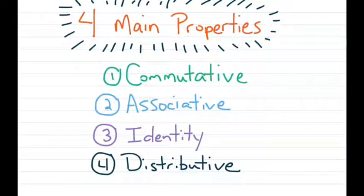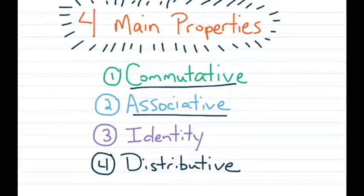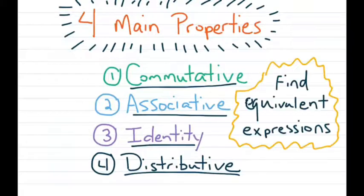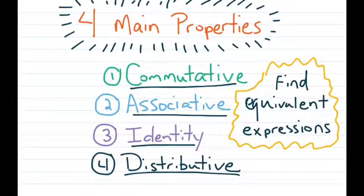There are four main properties that we're going to cover in this video: the commutative property, the associative property, the identity property, and the distributive property. We're going to use these to find two expressions that are equivalent to each other, and these properties are going to be used to show that.